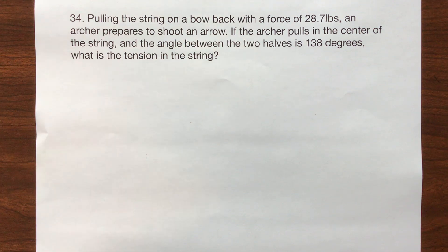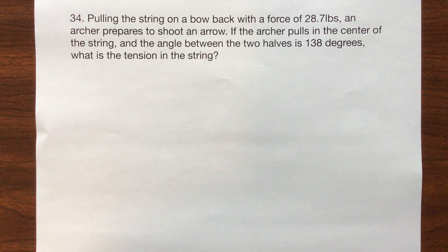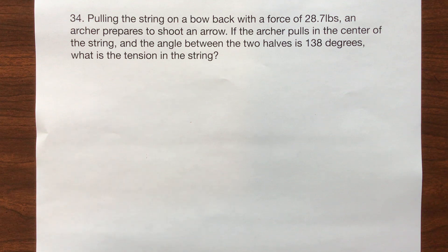Hello everybody, this is section 6.3 on translational equilibrium and we're doing question number 34. Pulling the string back on a bow with a force of 28.7 pounds, an archer prepares to shoot an arrow. If the archer pulls in the center of the string and the angle between the two halves is 138 degrees, what's the tension on the string?